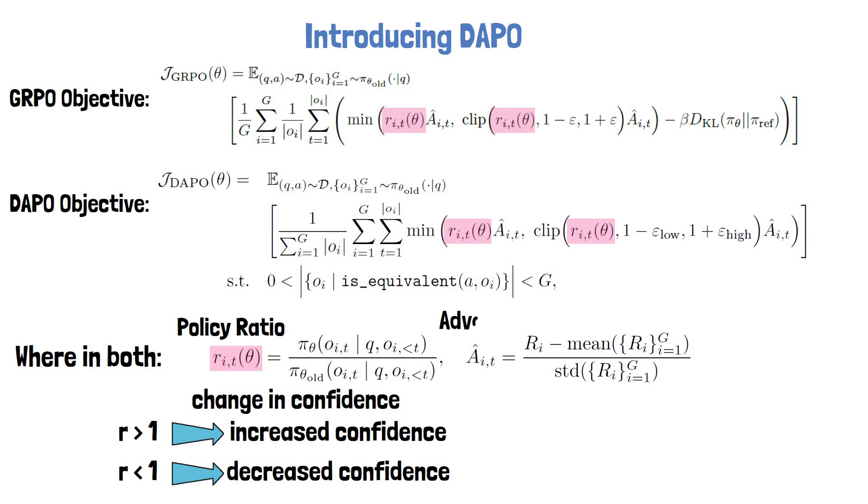Next, let's understand the advantage noted with capital A. This is a measure for the quality of the response comparing to other responses. For each question, multiple responses are sampled and a reward, noted with capital R, is calculated for each one, either by using a reward model or by using rule-based reward. The advantage of a response is measured by how high its reward, comparing to other responses for the same question. If the advantage is positive, it means the response is better than the average response.